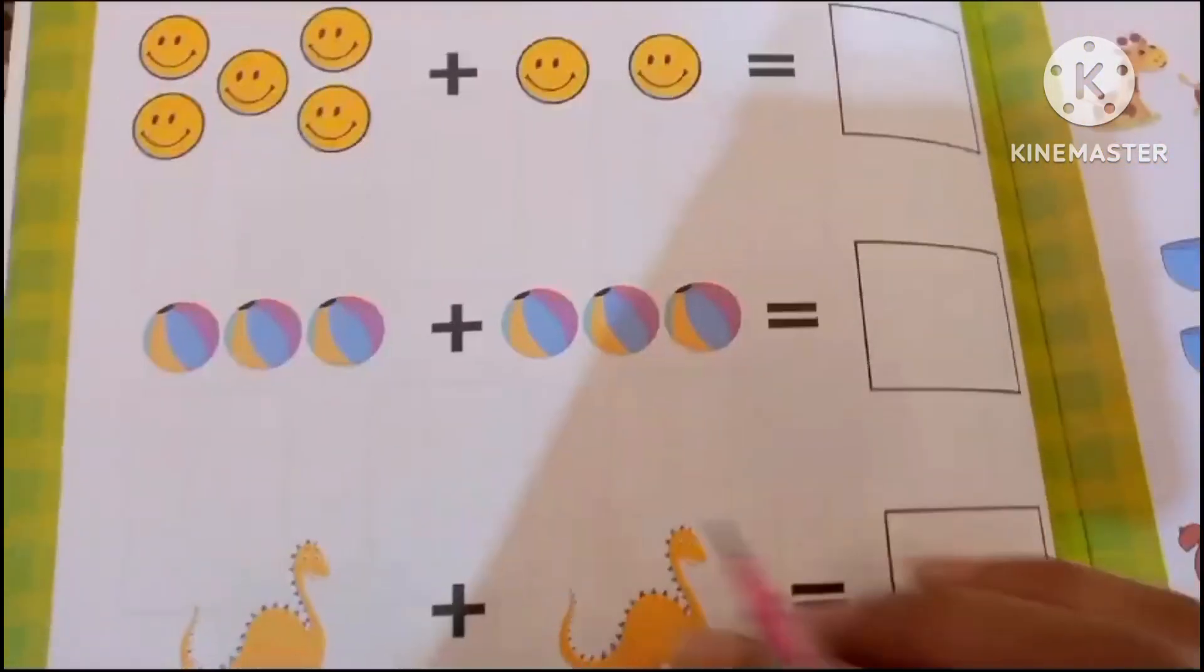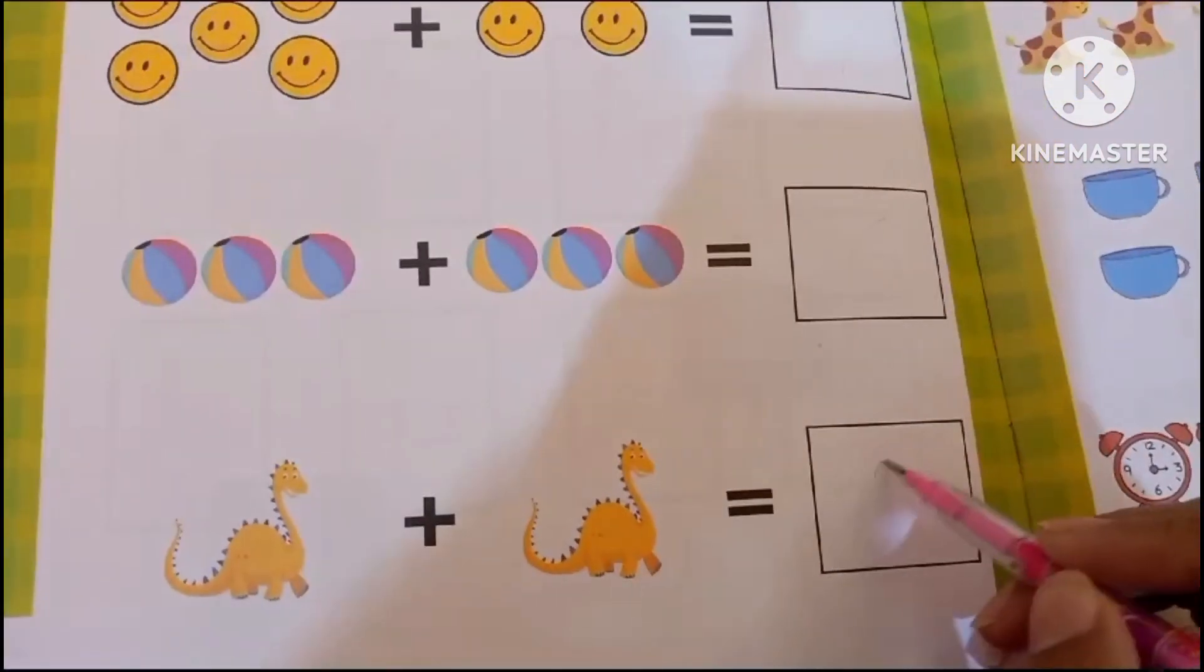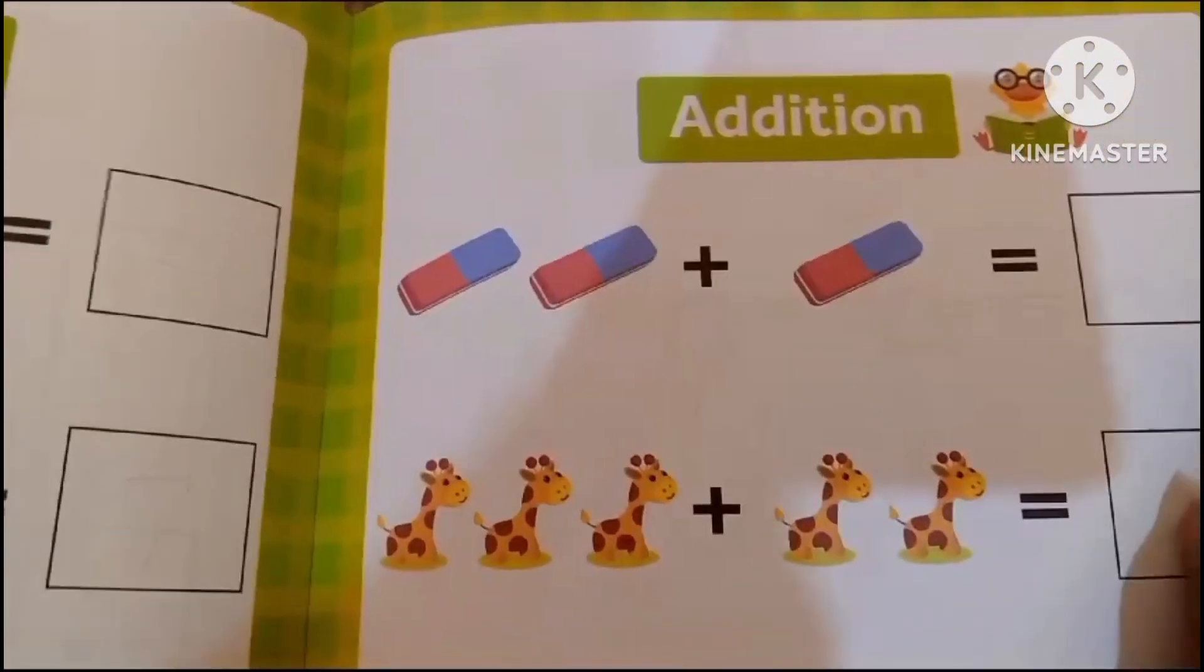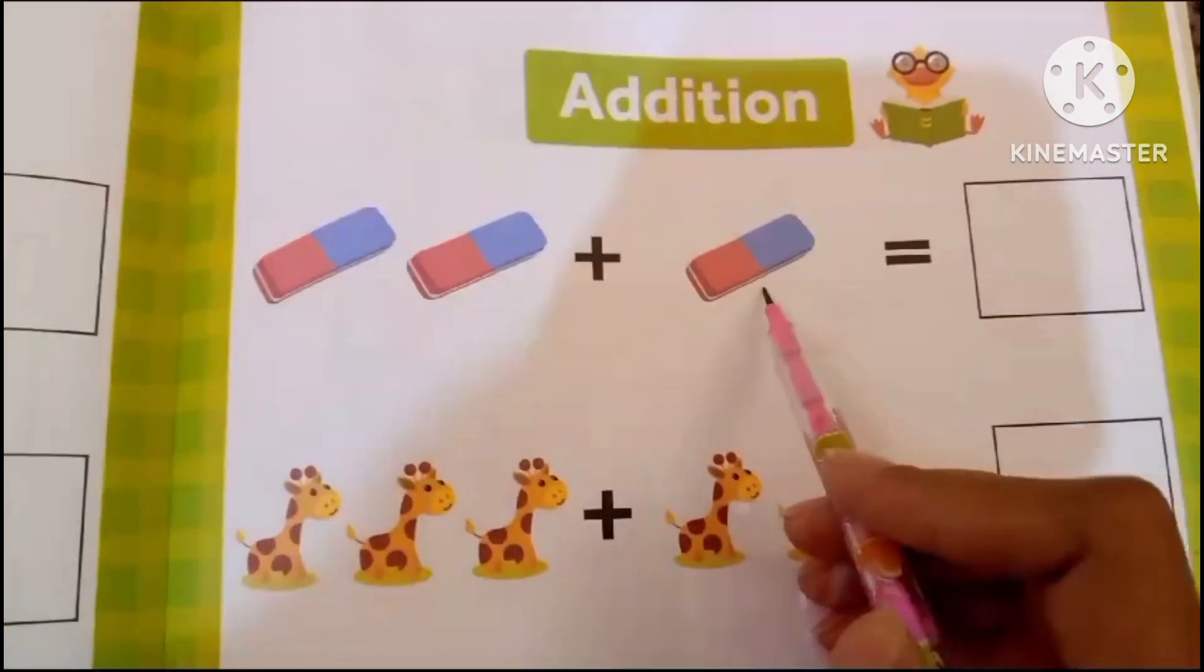How many dinosaurs are here? 1, 2. How many erasers are here? 1, 2, 3.